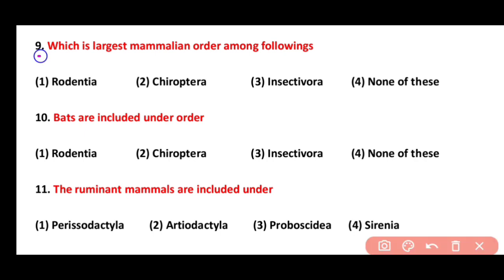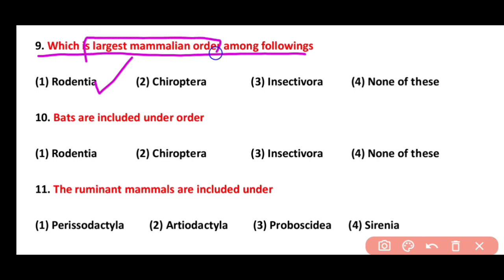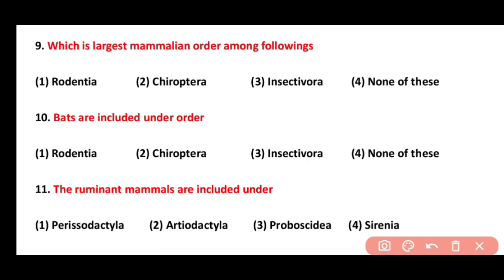Question 9. Which is the largest mammalian order among the following? Rodentia, Chiroptera, or Insectivora. Correct answer is option 1. Rodentia is the largest mammalian order, while the second largest is Chiroptera, and the third largest is Insectivora.